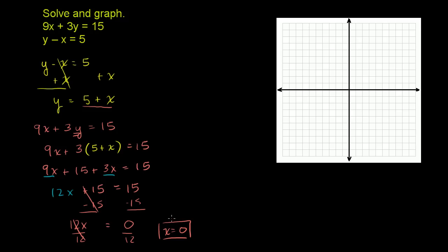Now if x equals 0, what is y? Well we could substitute into either one of these equations up here. If we substitute x equals 0 in this first equation, you get 9 times 0 plus 3y is equal to 15. Or, that's just 0, so you get 3y is equal to 15. Divide both sides by 3, you get y is equal to 15 over 3, or 5. y is equal to 5.